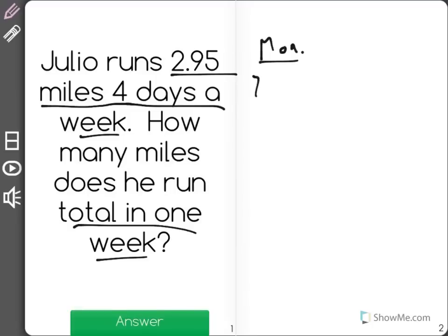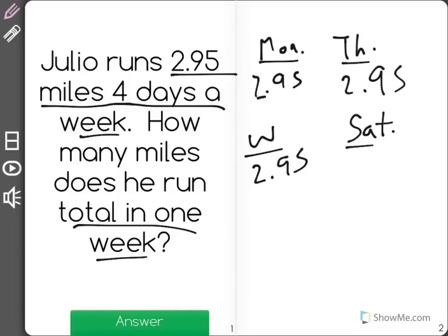Maybe Monday he goes and he runs 2.95 miles, and on Wednesday he does the same, and Thursday he'll do 2.95, and then Saturday. So really what we have here is we have four groups of 2.95.